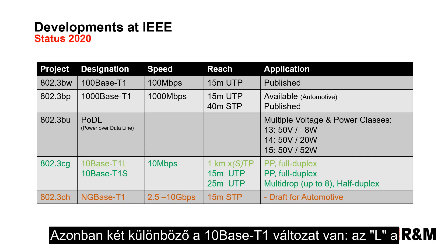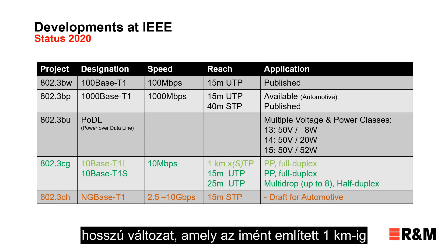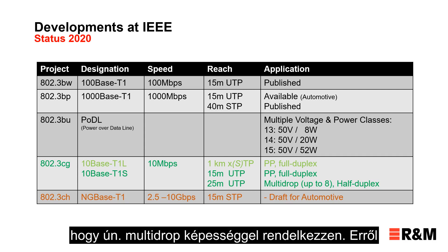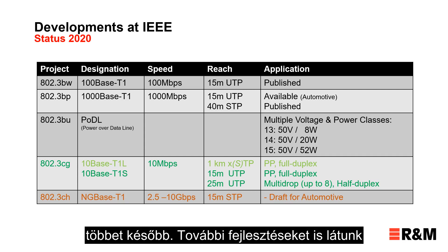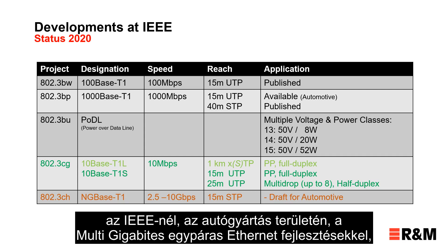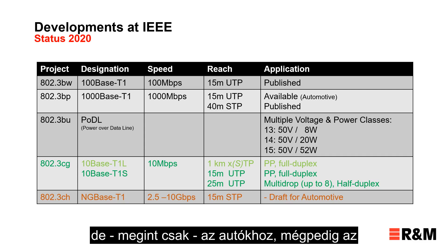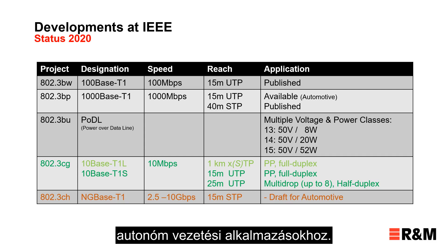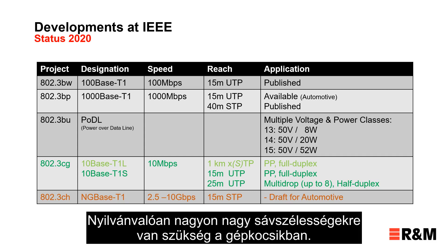However, there are two different variants of 10BASE-T1. The L, or long version, reaches the mentioned one kilometer. There is also the short version, S, which allows multi-drop capability — more on that later. We also see further developments in IEEE on the automotive side with multi-gigabit single-pair Ethernet for autonomous driving applications, where very high bandwidth within the car is required.